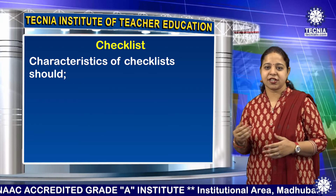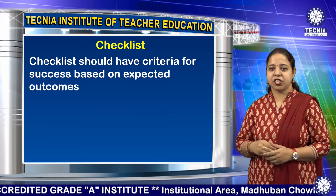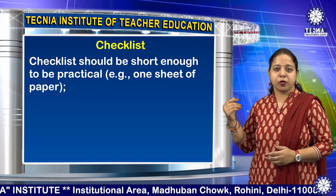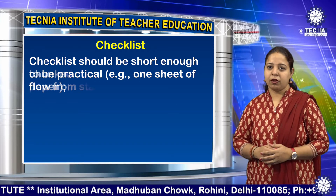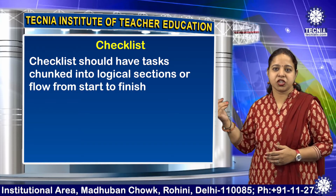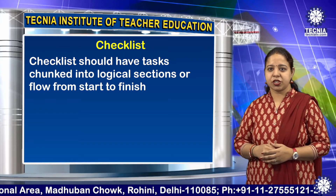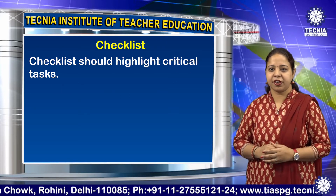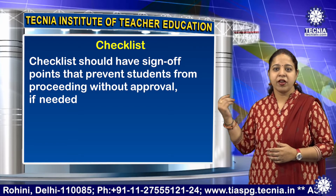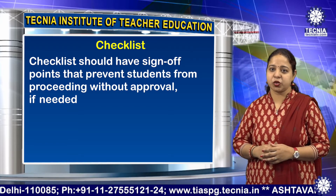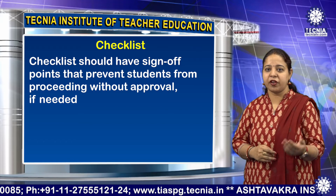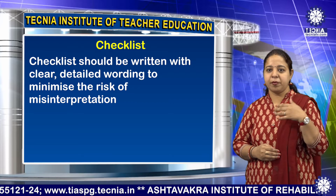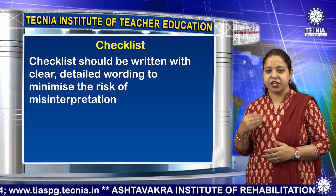Now we will discuss characteristics of checklist. Checklist should have criteria for success based on expected outcomes. Checklist should be short enough to be practical. Checklist should have tasks chunked into logical sections or flow from start to finish. Checklist should highlight critical tasks. Checklist should have sign-off points that prevent students from proceeding without approval if needed.